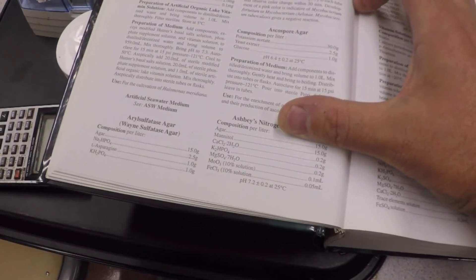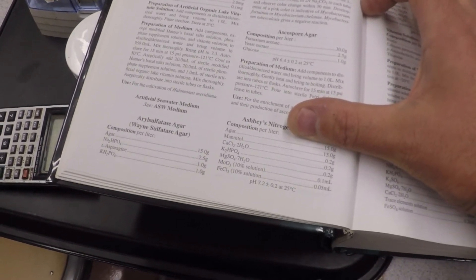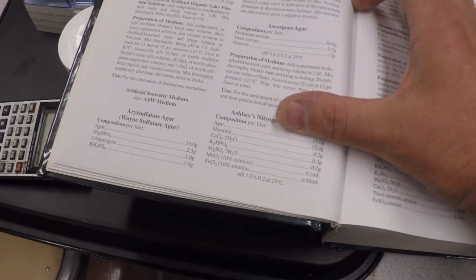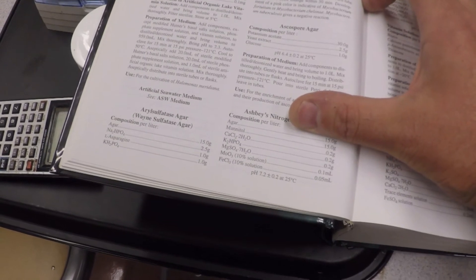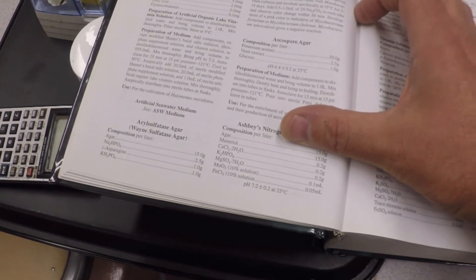Mannitol is a carbon source. There's micronutrients in there, elements like calcium and potassium, magnesium sulfate. There's iron. There's molybdenum. What is it that we're missing in this thing?